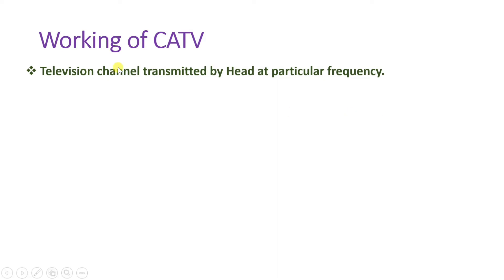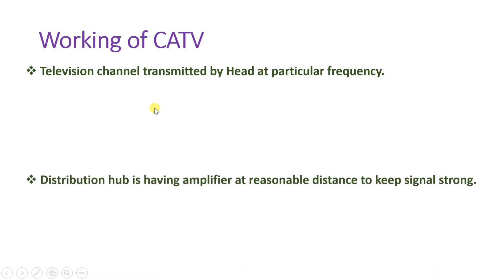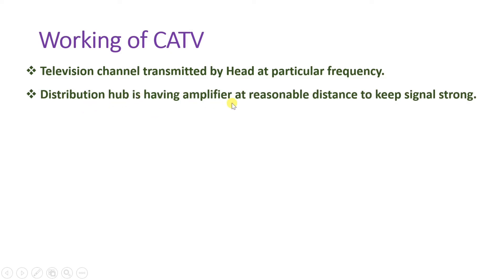Channels on cable television are transmitted at particular frequencies. Different channels are available at different frequencies, which one can see on their television by tuning different channels. The distribution hub has amplifiers at reasonable distances to keep the signal strong. If you don't provide amplification, distortion will occur in the television because of lower signal strength received at different users. So all one needs to do is provide amplification, and that is what cable operators are doing.